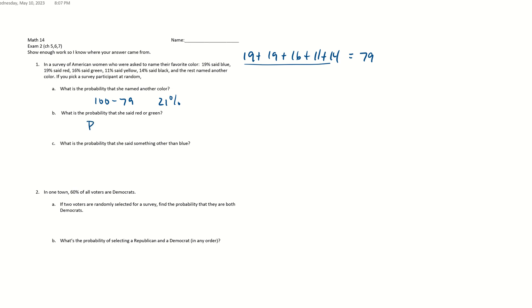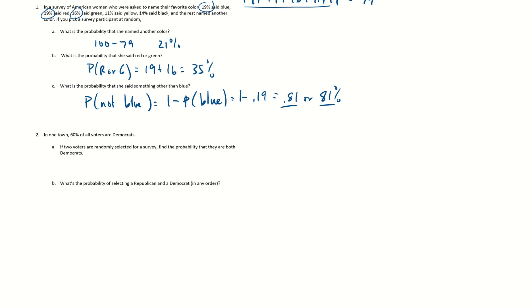Okay, probability of red or green. Let's see, 19 said red, 16 said green. So just add them up and you get 35. 19 plus 16 is 35 percent. Probability said something other than blue. So probability of not blue. Well, that's one minus the probability that they said blue because it's a complement. One minus 0.19, which is 0.81 or 81 percent. You can leave them as decimals or a percent. Either one is fine.